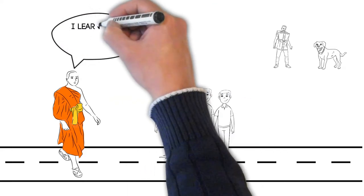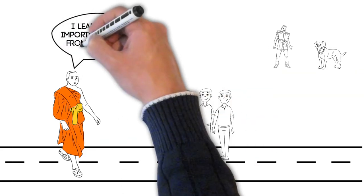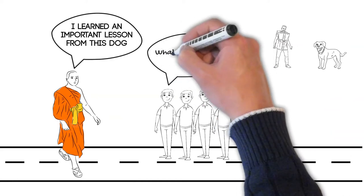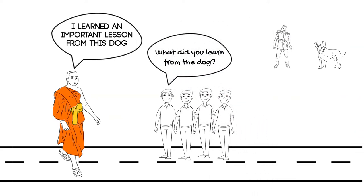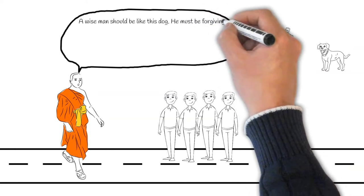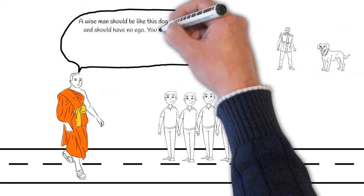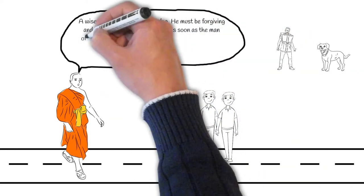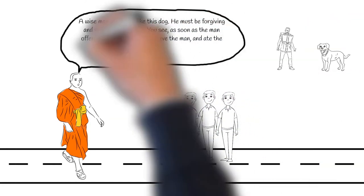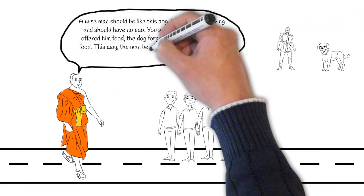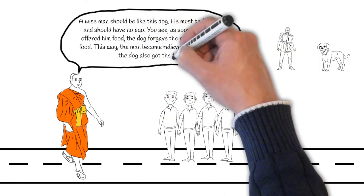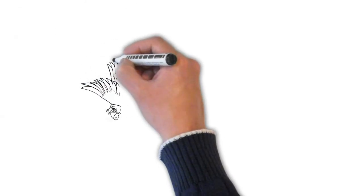The saint said, I learned an important lesson from this dog. The disciple asked with great surprise, what did you learn from the dog? The saint said, a wise man should be like this dog. He must be forgiving and should have no ego. You see, as soon as the man offered him food, the dog forgave the man and ate the food. This way, the man became relieved of his guilt and the dog also got the food.